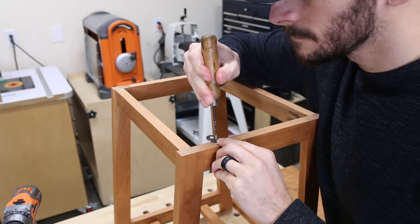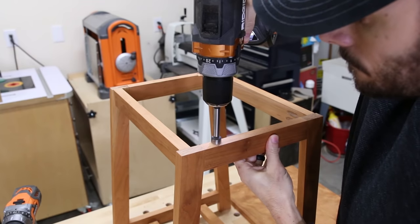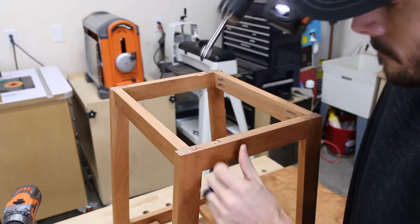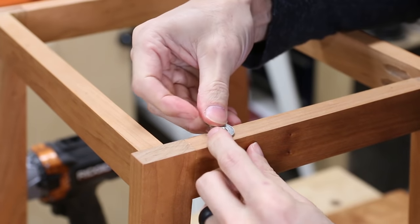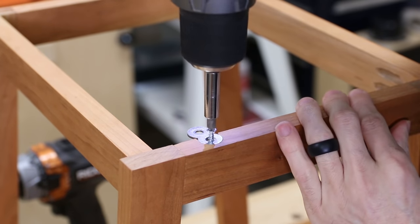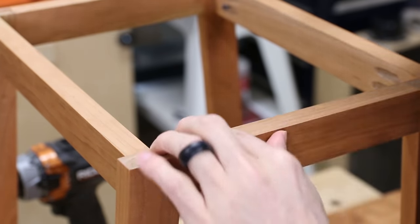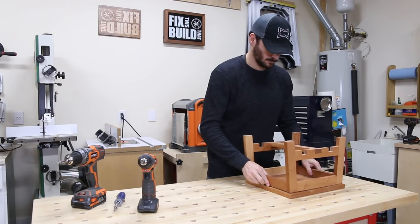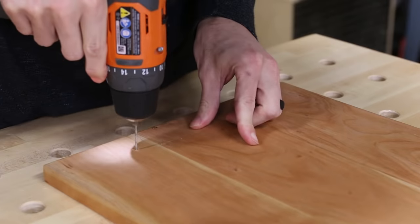To attach the tops to the bases I used some figure eight fasteners. These will let the top expand and contract with humidity and the figure eights will basically pivot and move as the top moves to keep it from cracking. I used a Forstner bit to flush mount the fasteners to the base. Then I turned the base upside down and pre-drilled and attached the top with the included screws.